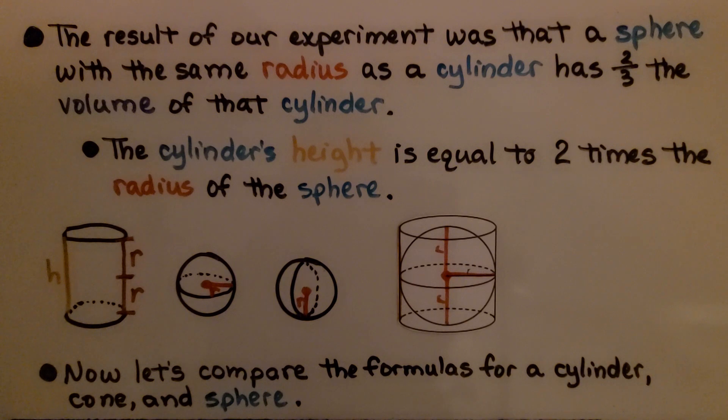The result of our experiment was that a sphere with the same radius as a cylinder has two-thirds the volume of that cylinder.